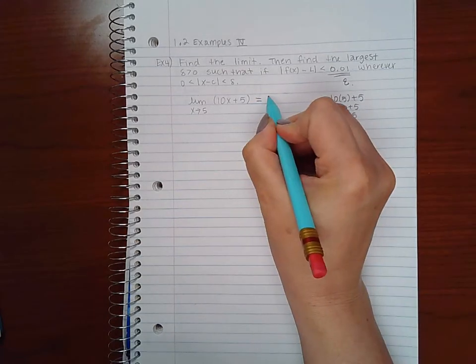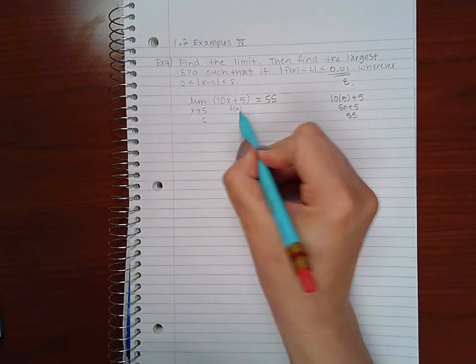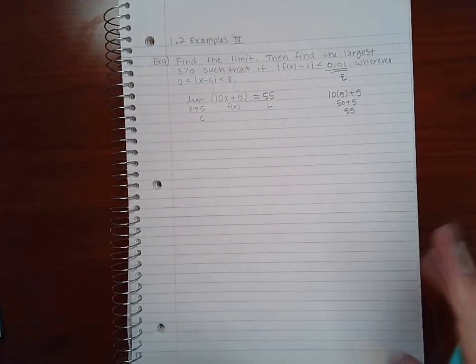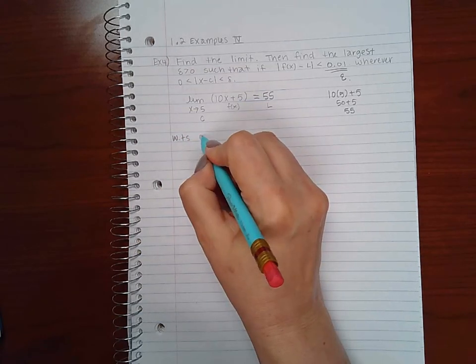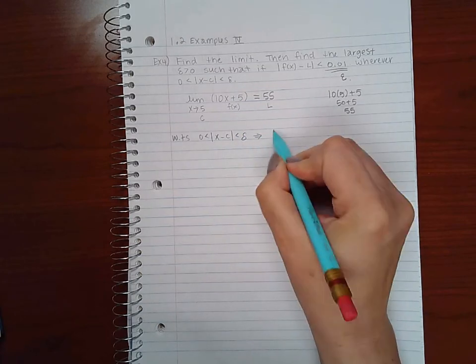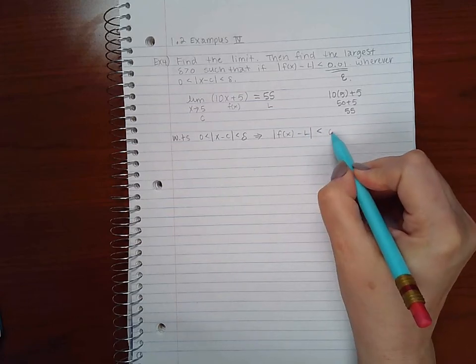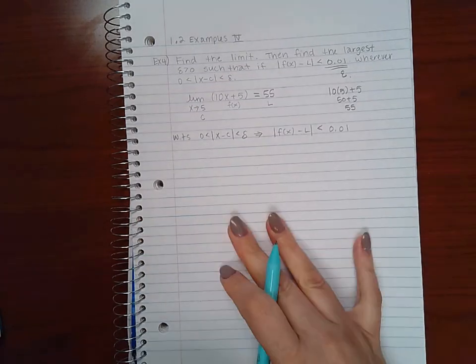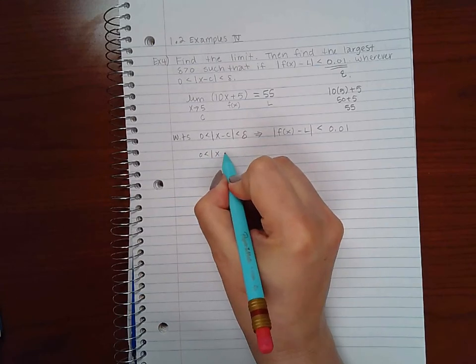So this equals 55. This is my c, this is my function, this is my L. The limit definition tells us we want to show that for this statement here it implies this statement here, and they have specifically given me an epsilon 0.01.